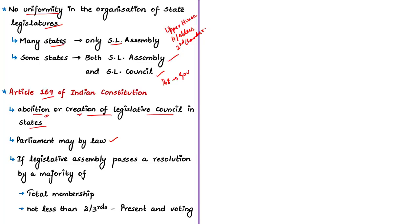Before Parliament enacts a law to create or abolish a legislative council, the legislative assembly of the concerned state has to pass a resolution. This resolution shall be passed by a majority of the total membership of the legislative assembly and by a majority of not less than two-thirds of the members present and voting. If this resolution is passed, Parliament may by law create or abolish the legislative council in the concerned state.